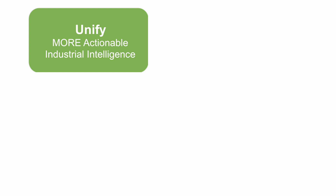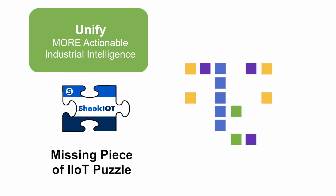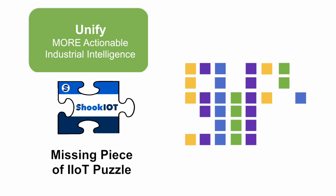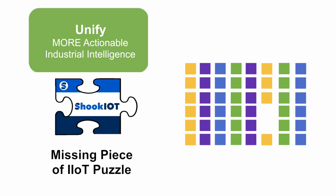Now it is time to unify your industrial intelligence. Your data has been unlocked and liberated. Critical context, vital to your operations, has been created, organized, and made easy to use and share. Your data has been managed, stored, and prepared for advanced analytics, artificial intelligence, machine learning, and so much more in the cloud. Now it's time for unification of systems and production operations that provide unlimited opportunities with Shook IoT to drive faster, better decisions.